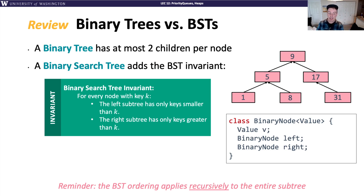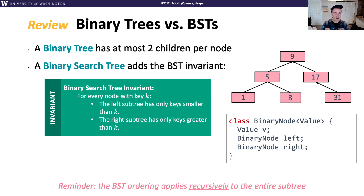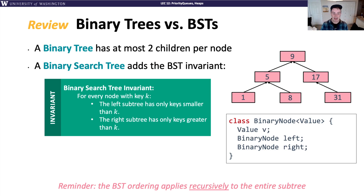We added an additional requirement called the AVL invariant, which yields an AVL tree that has to be roughly balanced. As a reminder, the binary search tree invariant and the AVL invariant are both additions on top of a plain binary tree. We'll see that a heap is just a different take on invariants you can place on a binary tree.